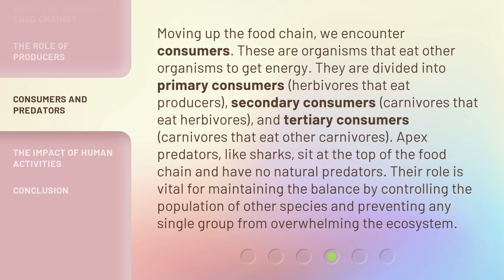Moving up the food chain, we encounter consumers — organisms that eat other organisms to get energy. They are divided into primary consumers, herbivores that eat producers; secondary consumers, carnivores that eat herbivores; and tertiary consumers, carnivores that eat other carnivores. Apex predators, like sharks, sit at the top of the food chain and have no natural predators. Their role is vital for maintaining balance by controlling the population of other species and preventing any single group from overwhelming the ecosystem.